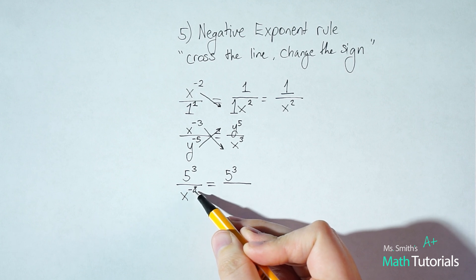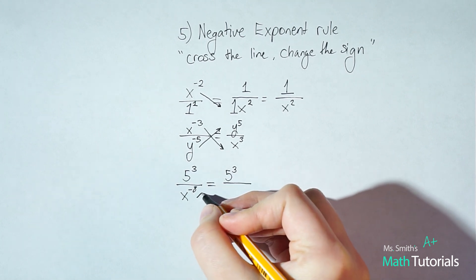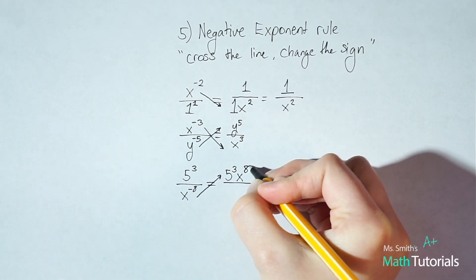Now this x to the negative eight, it does have a negative exponent. So I need to take it from the bottom and move it to the top. Cross the line, change the sign.